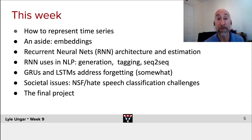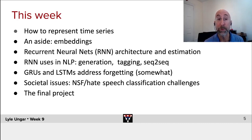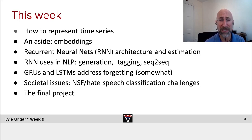So this week, what are we going to do? We'll talk about different ways to represent time series as inputs to deep learning. We'll do a brief digression to talk about embeddings — how to map words and images to vectors — and cover these in more detail next week. We'll then introduce the core architecture for recurrent neural nets and talk briefly about estimating them using back propagation — it's all just gradient descent. We'll talk about three main uses of RNNs: for generation, for language models, for tagging, and for sequence-to-sequence models. We'll also cover more advanced methods like gated recurrent units and long short-term memory (LSTM) networks, which try to deal with the fact that recurrent neural nets tend to forget information too quickly.